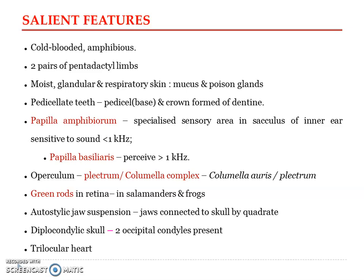Amphibians also have a diplocondylian skull, also called a dicondylian skull. The skull is movably articulated with the vertebral column with the help of two occipital condyles. That is why it is referred to as diplocondylian. In contrast, reptiles and birds have only a single occipital condyle — a monocondylian skull. The diplocondylian condition is also found in fishes and mammals.